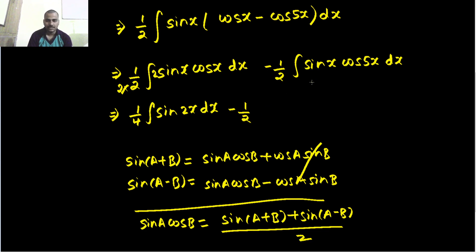So now, A is your x, B is your 5x. So you will be writing sin of their sum, which is 6x, and 1 half, please don't miss that, that will come out. And then plus their difference, so x minus 5x, this time you will get sin of minus 4x.